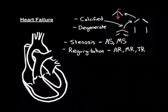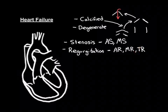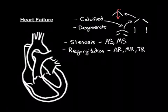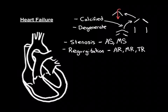With degeneration, the mitral valve and the tricuspid valve are the ones most commonly affected. So mitral regurgitation and tricuspid regurgitation will commonly occur because of degeneration of the valve leaflets. The pulmonary valve usually doesn't develop problems, so significant pulmonary stenosis or pulmonary regurgitation is very uncommon.